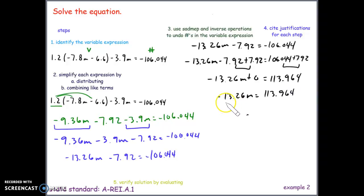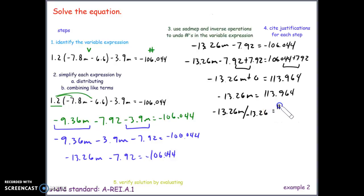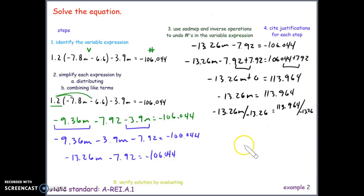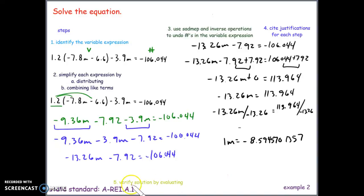Since there's no sign between negative 13.26 and m, they're being multiplied. We use the inverse — division — to eliminate it. We divide both sides by negative 13.26. On the left, negative 13.26 divided by negative 13.26 is 1, so we get 1m equals. Using the calculator for the right side, we get a long decimal: approximately negative 8.5945701357. So m equals negative 8.5945701357.